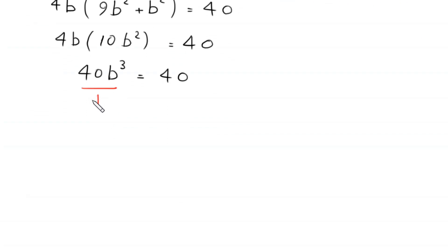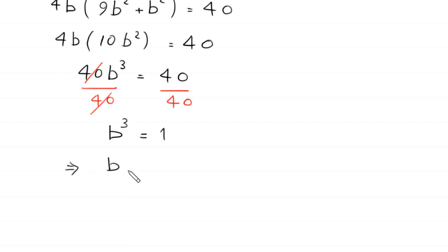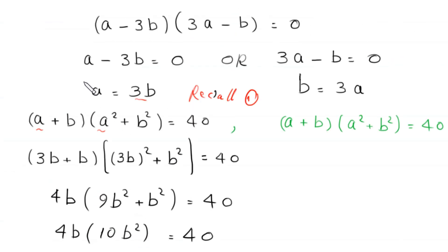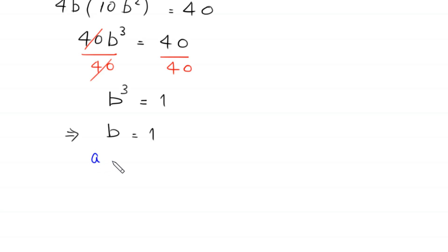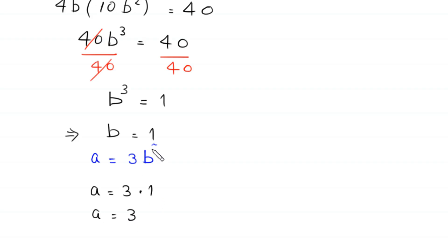Dividing both sides by 40, we get b³ = 1. Taking the cube root of both sides gives b = 1. To find a, we use a = 3b: when b = 1, a = 3 × 1 = 3. So for Case 1, when b = 1, a = 3.